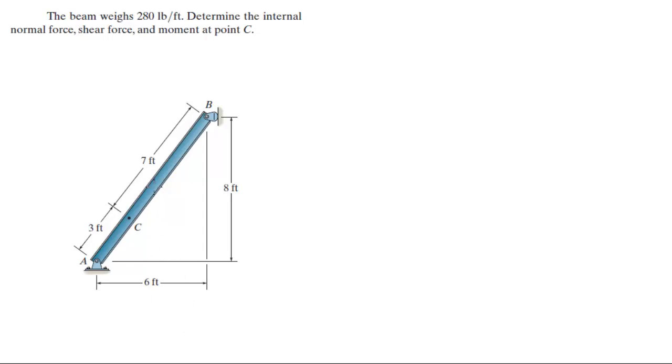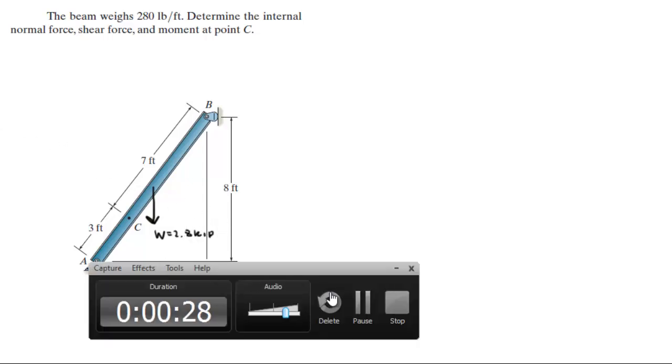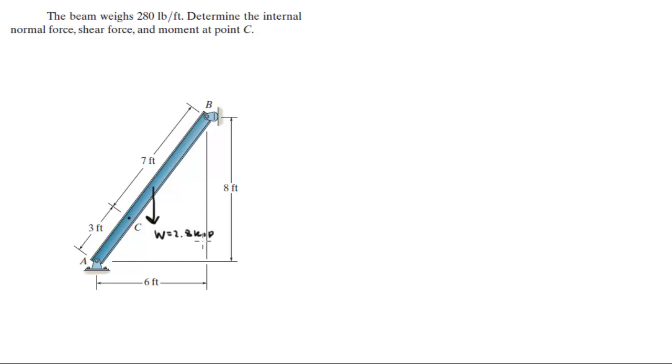That being said, you know that you got a weight of 2.8 kip, because the W is equal to the 280 pounds per foot times the amount of feet which is 10 feet, which is the length of the assembly, which will make it 2.8 kilopounds.